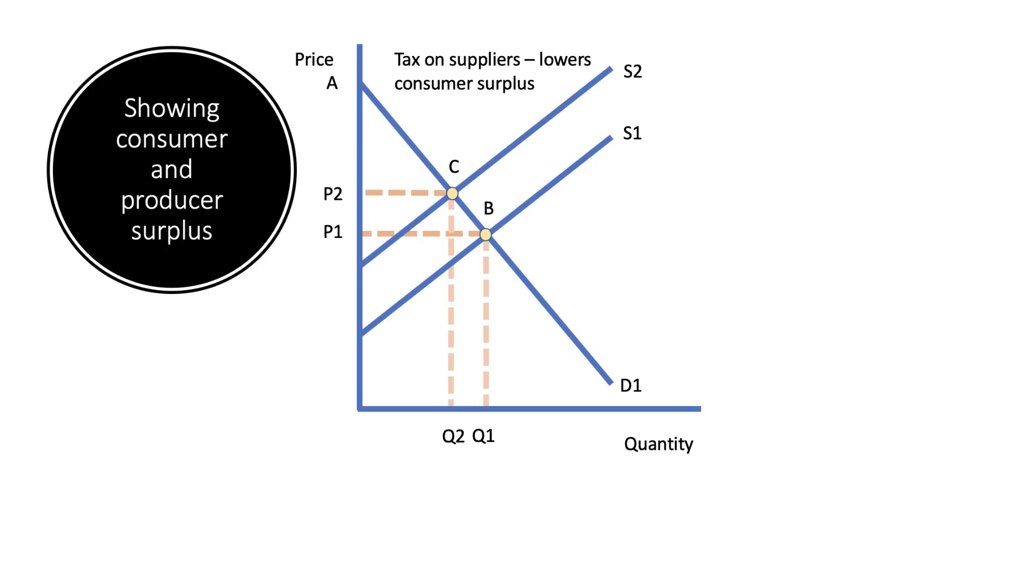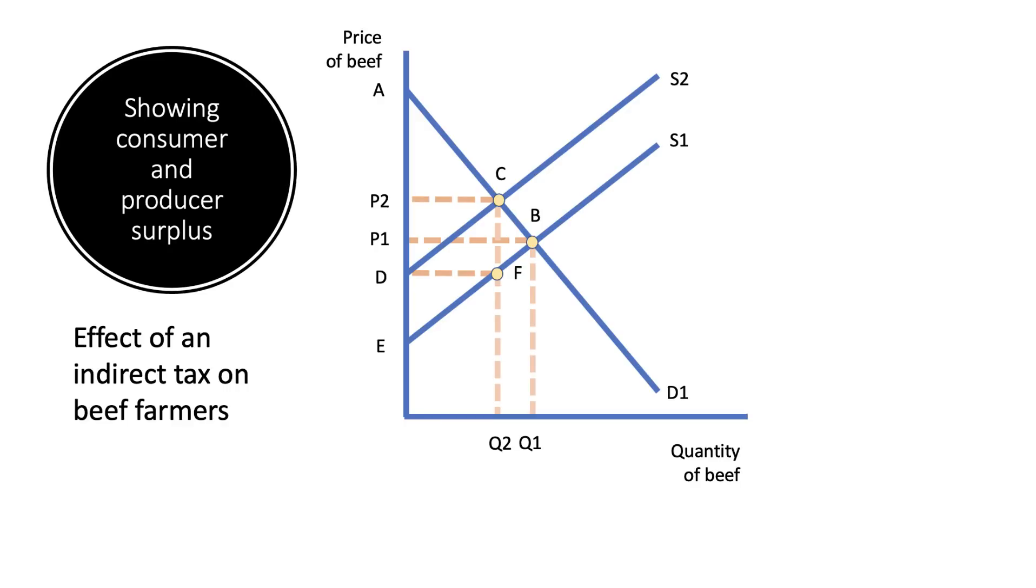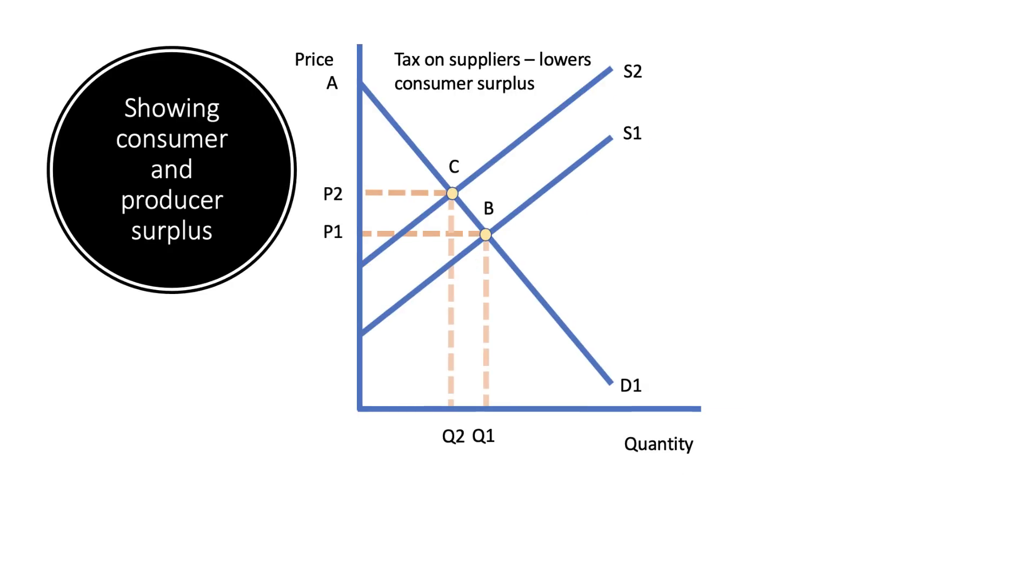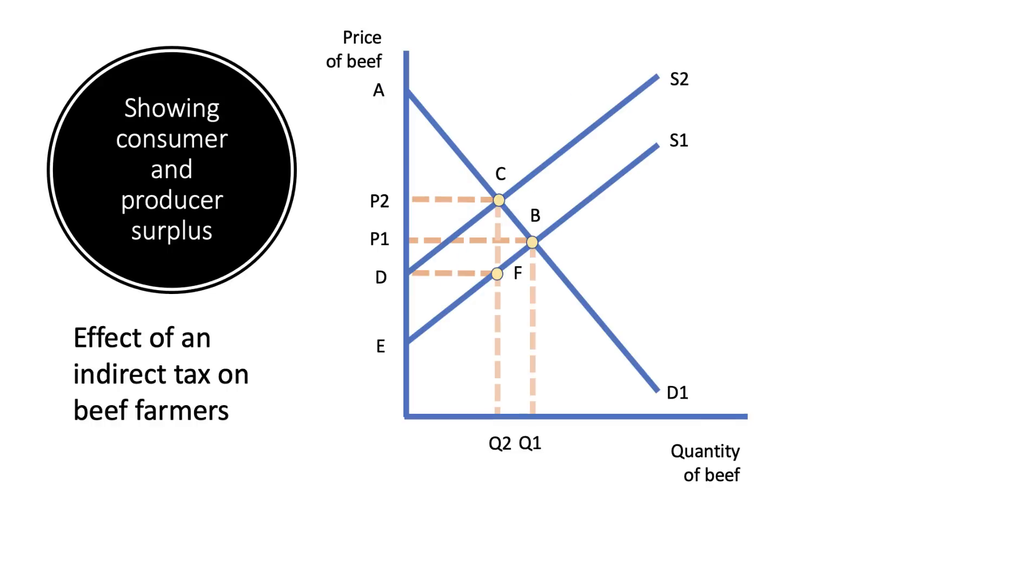A couple of examples of what I mean by this. This is, let's say, you get a question on a tax. This could be, for example, a tax on a supplier. It's really good to draw to the axis. You can show the effect of a tax on, for example, consumer surplus. This is a tax on beef farmers. I've just made a slight difference to the diagram. Price of beef on the y-axis there, quantity of beef on the x-axis. So you're contextualising the diagram.